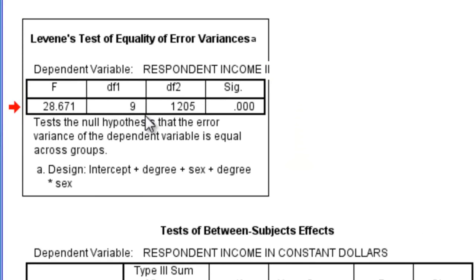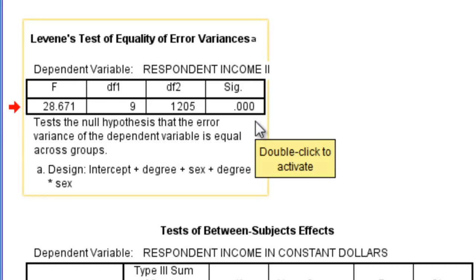Levene's test is shown here. If I look at Levene's test, it is statistically significant. And so this is an indication that my variances, the spread of scores, my variances are not equal. My assumption, my homogeneity of variance assumption is that they are equal though.